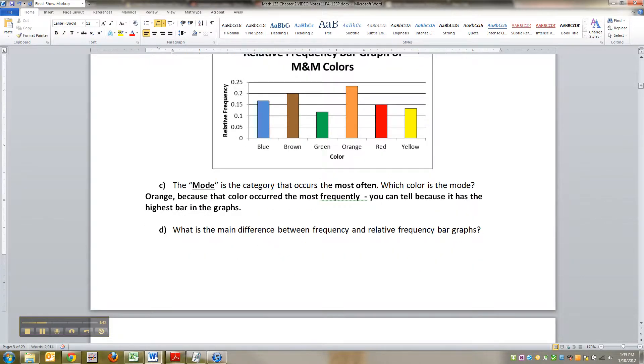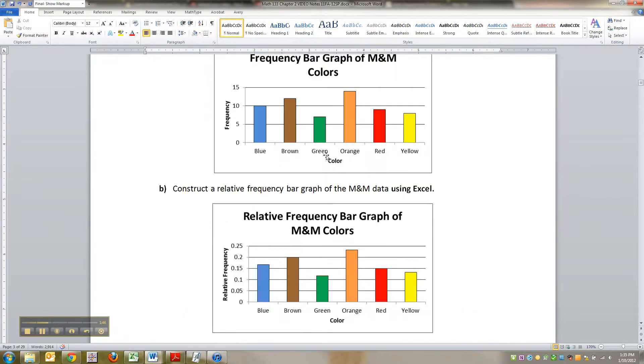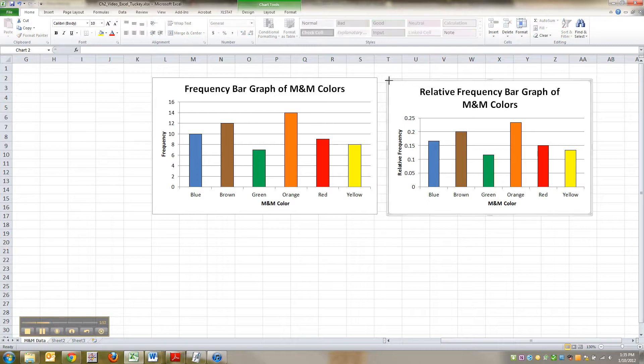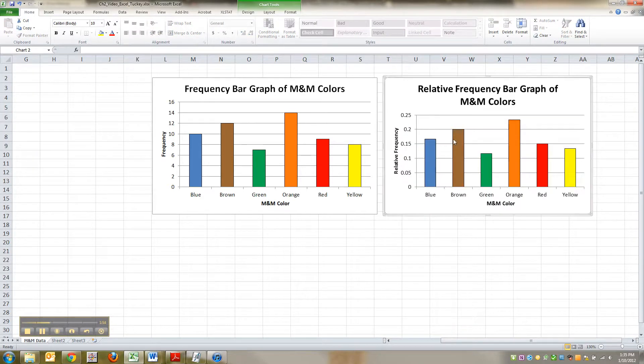Alright, now what is the big difference between a frequency and a relative frequency bar graph? I mean, when we made them in Excel, were they really vastly different from each other? I mean, look at these two graphs. Here, let me drag this up just a little bit. What's the big difference? And the real big difference comes from what your vertical axis is labeled with.